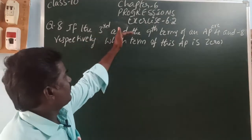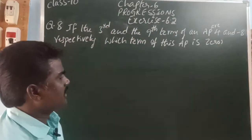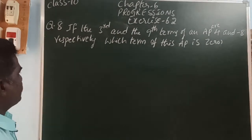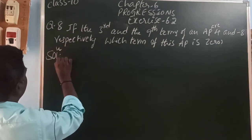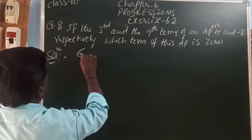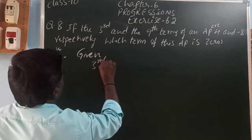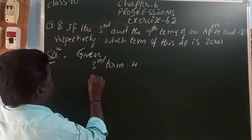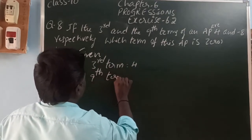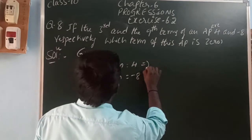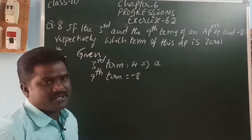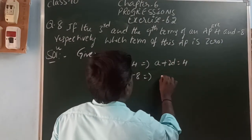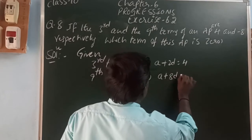If the third and the ninth term of an AP are 4 and minus 8 respectively, which term of this AP is 0? So, here, given: third term is 4. Next, ninth term is minus 8. So, third term means the general form: A plus 2D. So, A plus 2D is equal to 4. Next, A plus 8D is equal to minus 8.